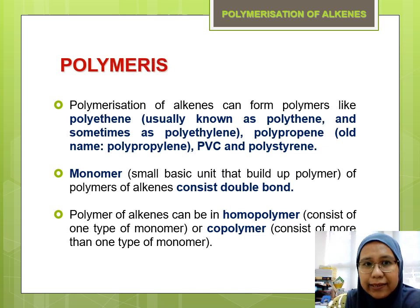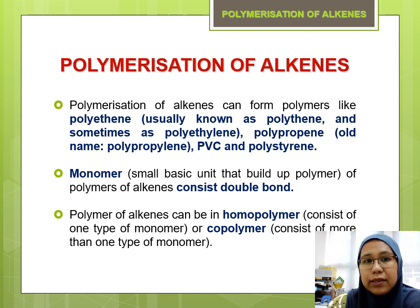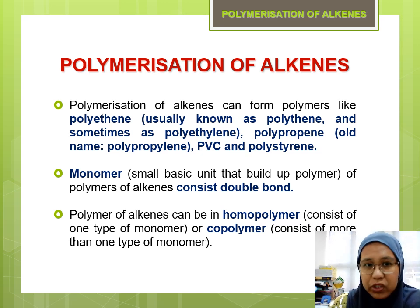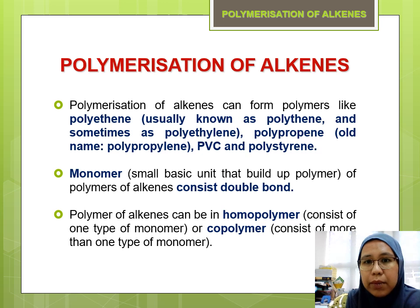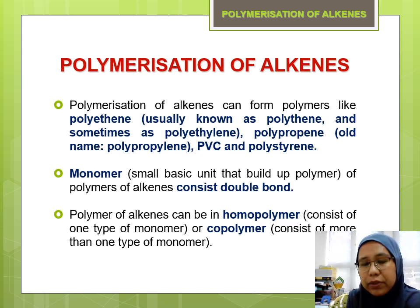What is polymerization? It's a process to form a polymer, such as polyethene — sometimes called polythene or polyethylene — polypropene (old name polypropylene), PVC, and polystyrene. These four examples are critical for us to know.